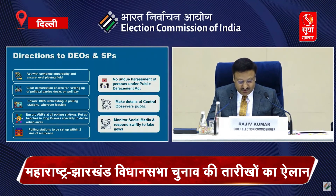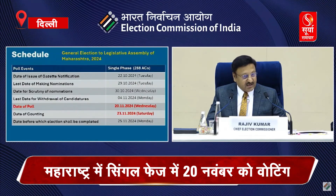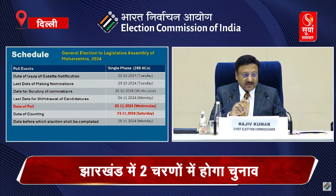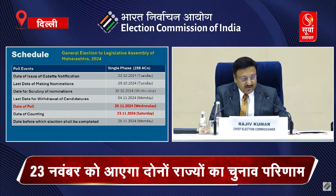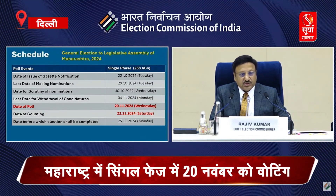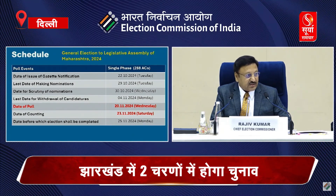Now I come to the schedule for Maharashtra. This will be in single phase. The date of notifications are in front of you. 22nd October would be date of notification. Last date of making nomination would be 29th October. Scrutiny on 30th October, and last date for withdrawal 4th. And date of poll in Maharashtra would be 20th November.